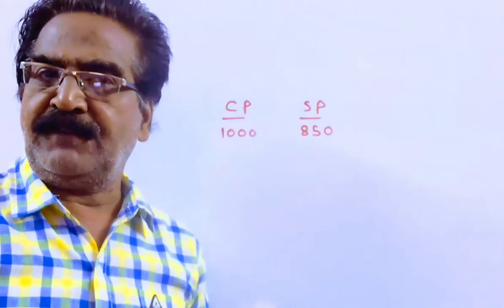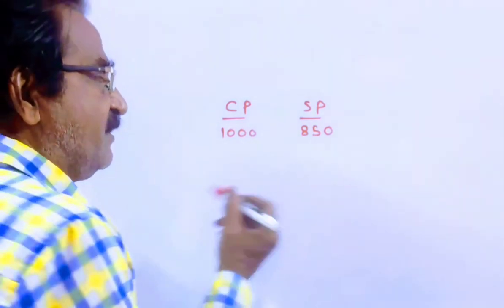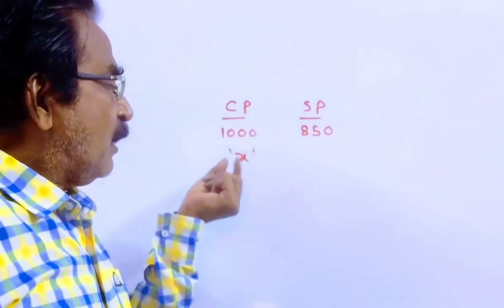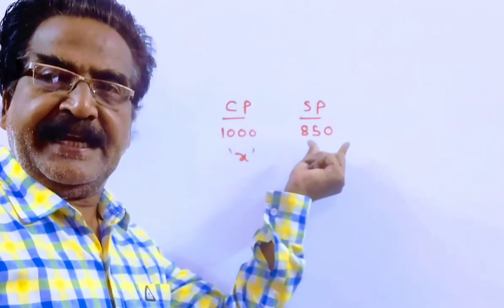This is selling at 15% loss, but he uses a false weight, say X grams for a kilogram. So now his cost price is X and selling price is 850.